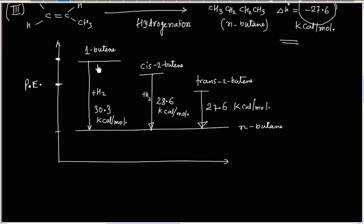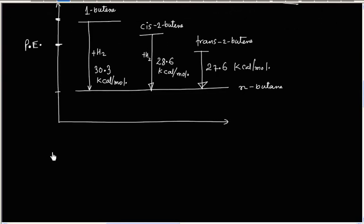From this diagram we can say that 1-butene has the highest potential energy and is therefore the least stable, while trans-2-butene has the lowest potential energy and is the most stable. The stability order is: 1-butene < cis-2-butene < trans-2-butene.